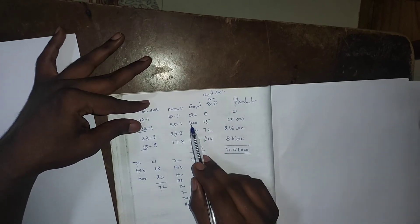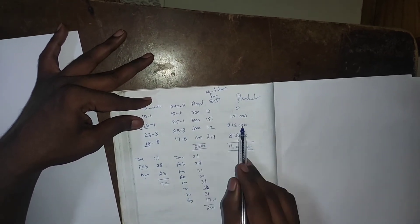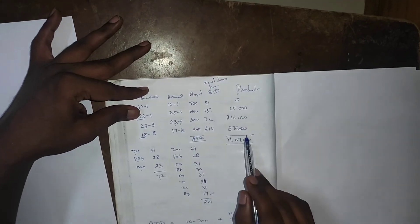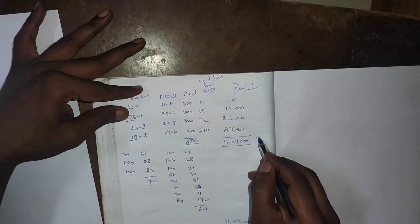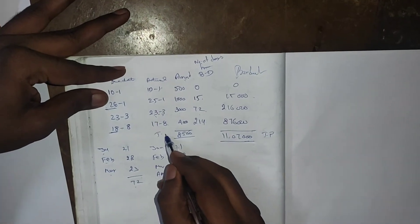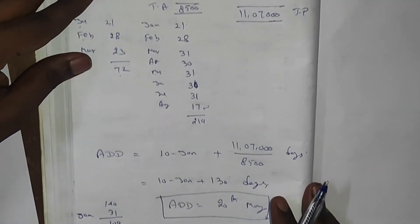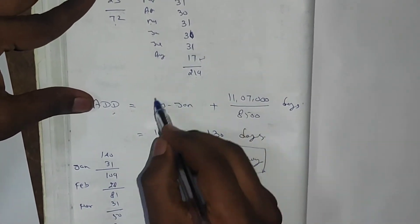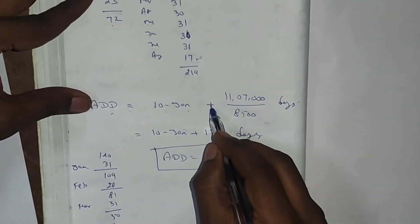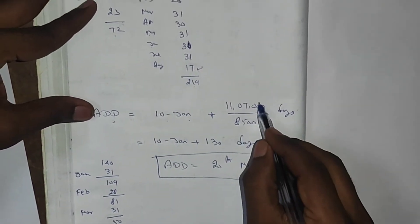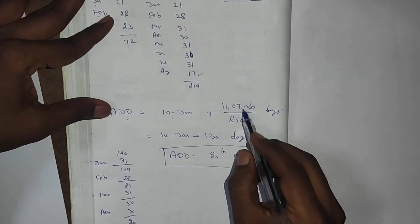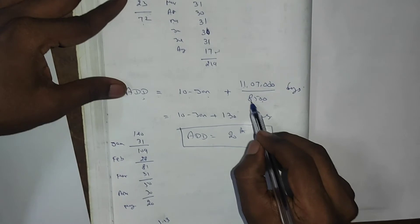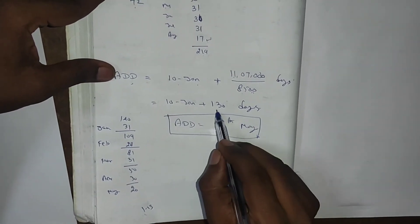Now calculate the product for each amount. Product: 0 × 500 = 0; 15 × 1000 = 15,000; 72 × 3000 = 216,000; 219 × 4000 = 876,000. The total product is 11,07,000 and the total amount is 8,500. Average Due Date equals base date plus total product divided by total amount.